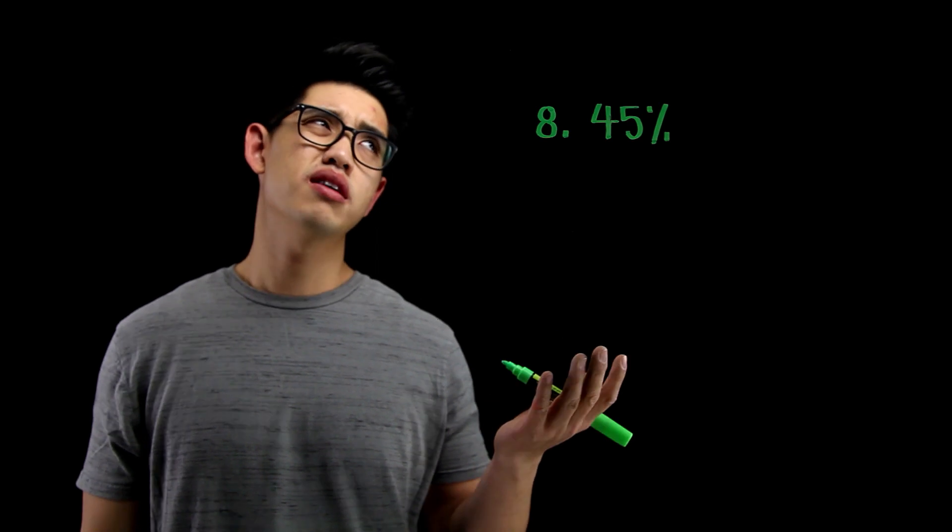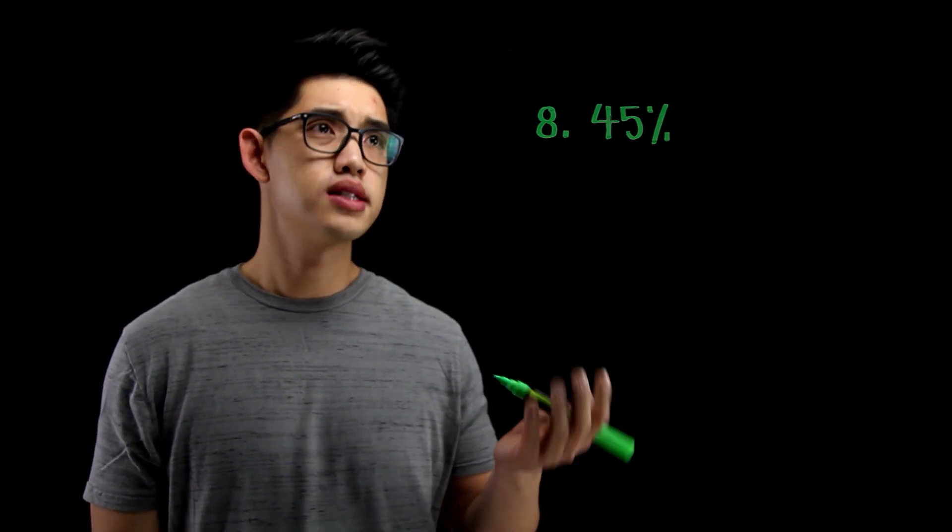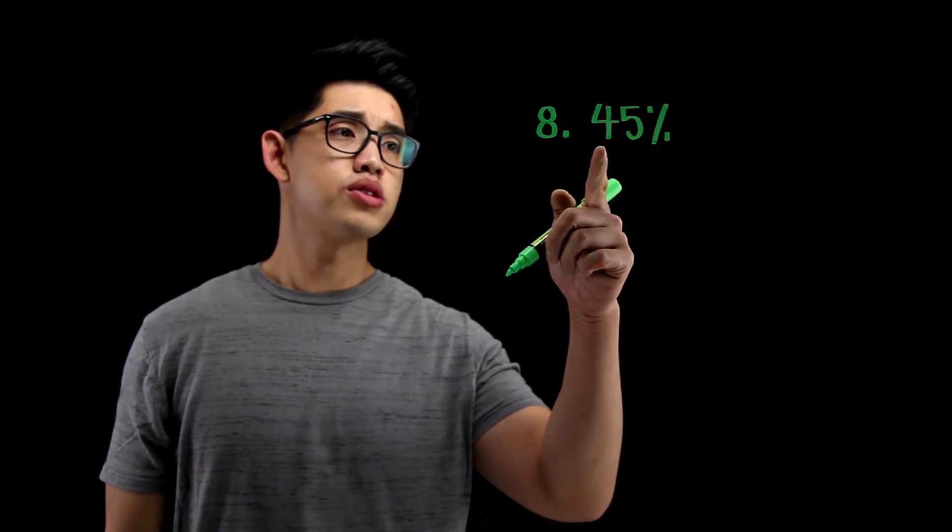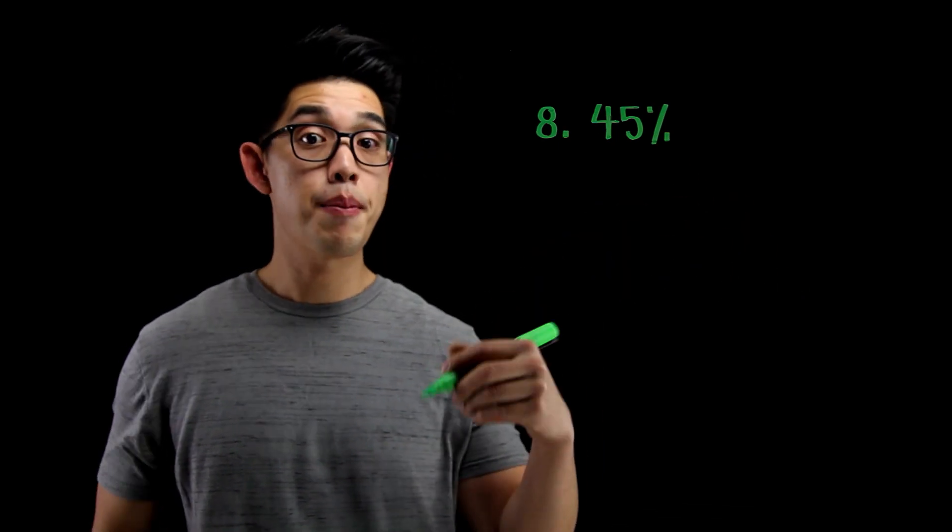Cent means 100. It's kind of like there are 100 cents in a dollar. So again, 45% is 45 per 100. I'm going to write 45 per 100 or 45 out of 100.